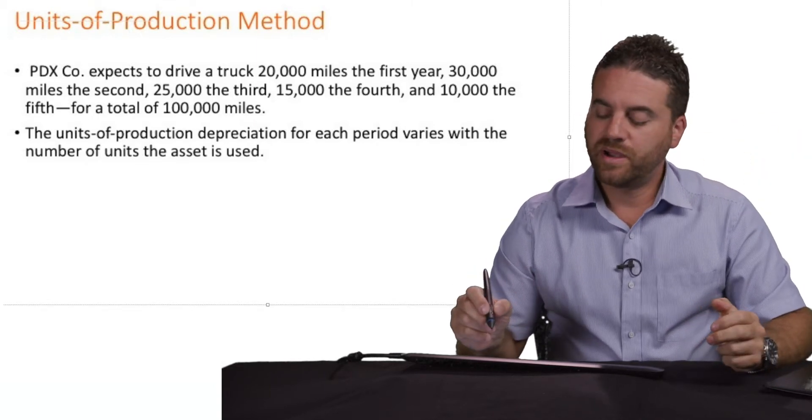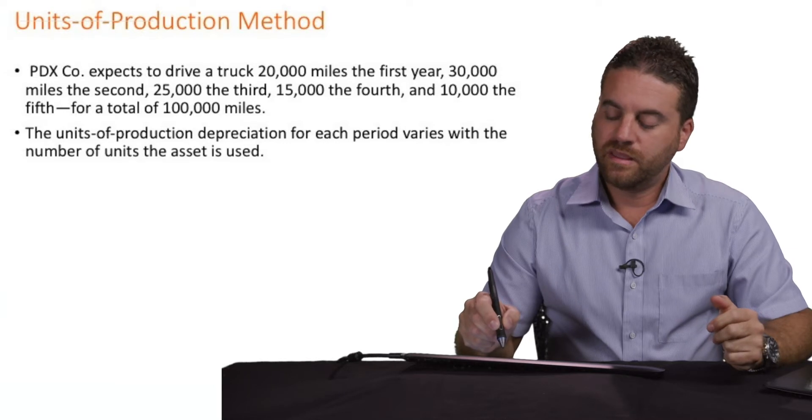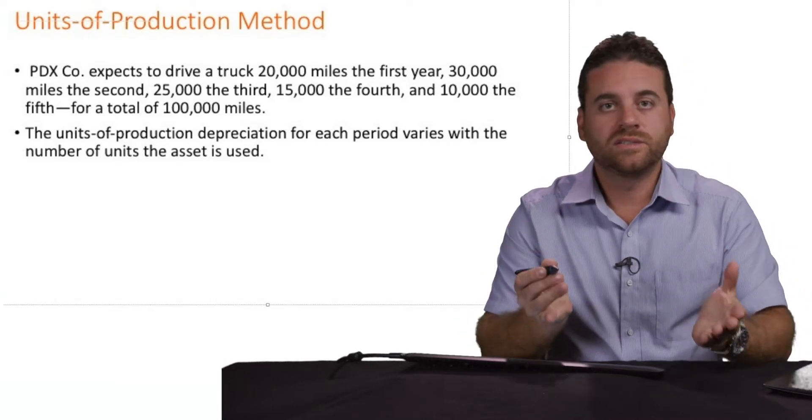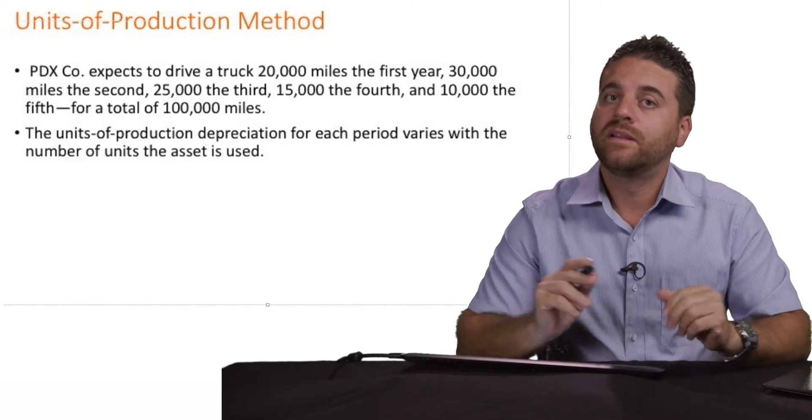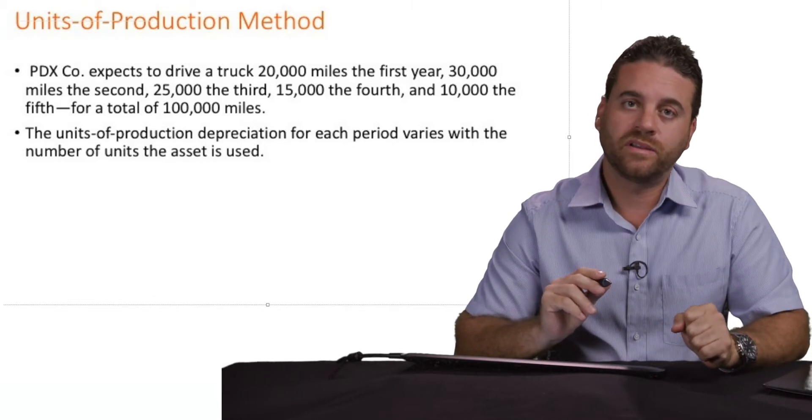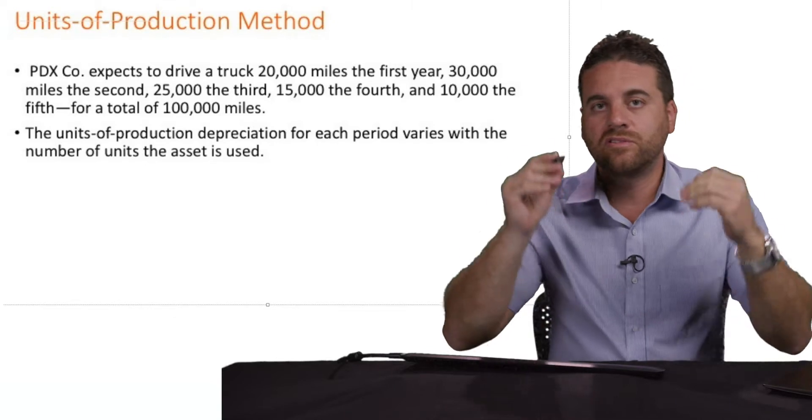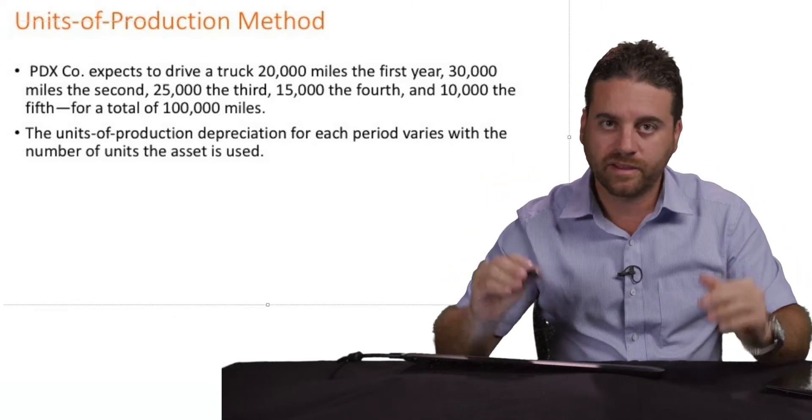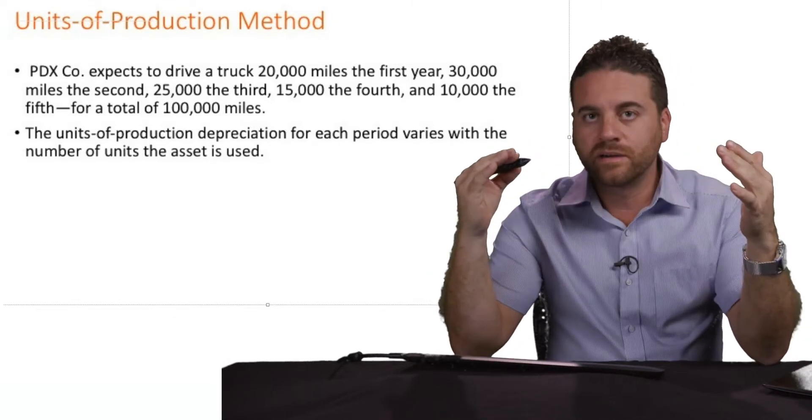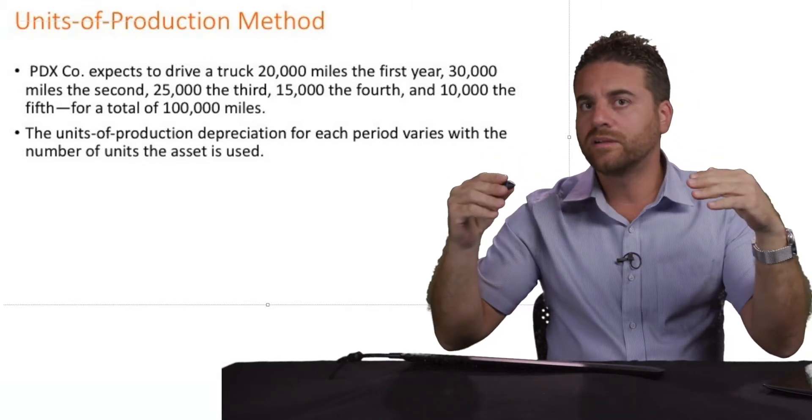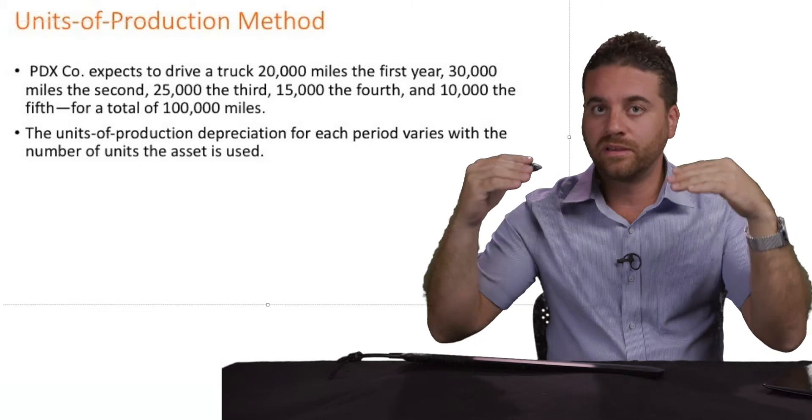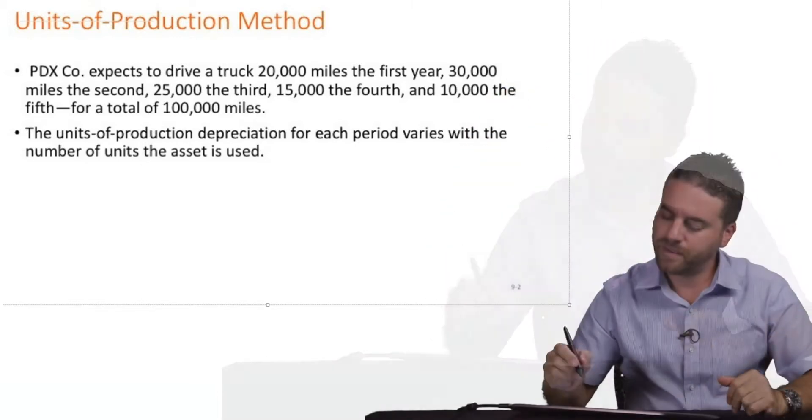So the cost per mile is the total depreciation over the five years divided by the total number of miles that we're going to use it over the five years. So the total divided by the total. Remember that, total divided by total. Total dollars divided by the total units. Dollar amount is always in the numerator. It's always up.